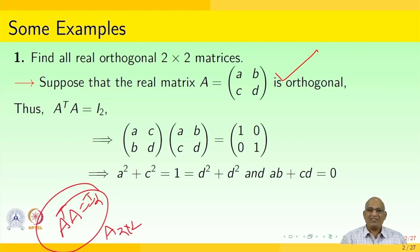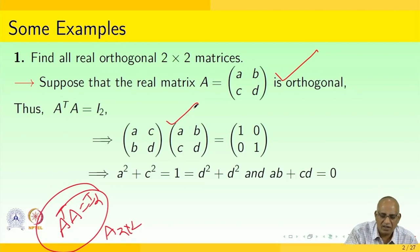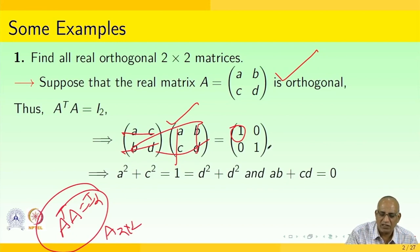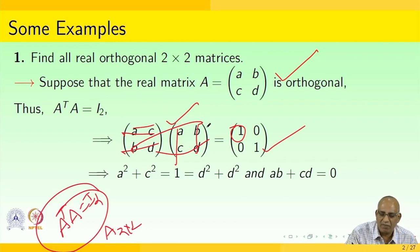Taking the matrix multiplication: the first row, first column gives a² + c² = 1. Similarly, the second row, second column gives b² + d² = 1. The first row, second column gives ab + cd = 0. Similarly, the second row, first column gives ad + dc = 0.